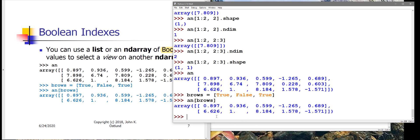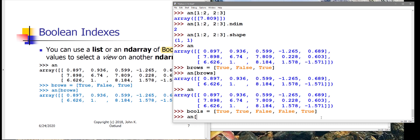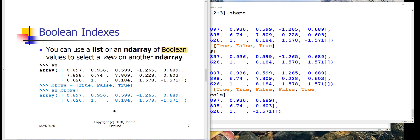We can also select certain columns using a boolean index. B cols is true, true, false, false, true — five values for five columns. I say AN sub colon comma b cols: the colon gives all rows, and b cols selects only columns sub zero, one, and four, but not columns sub two and three. This is the idea of a boolean index — it allows you to select by true-false values which rows and or columns you want.